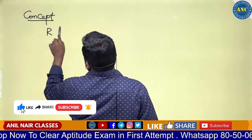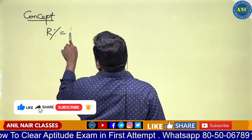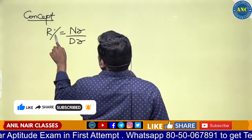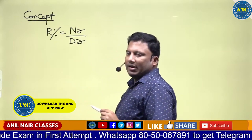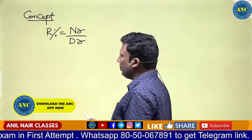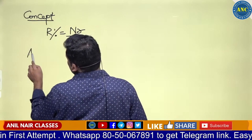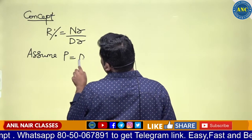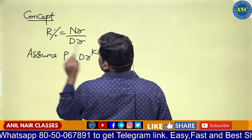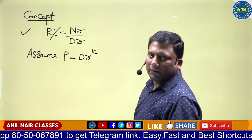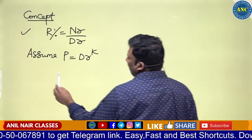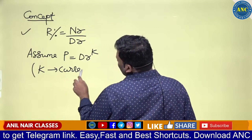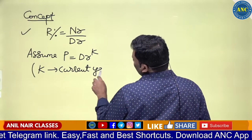If R percentage can be written as a fraction, write it as numerator by denominator. Assume the principal as the denominator raised to the power k. K refers to the current year or the number of years given in the problem.